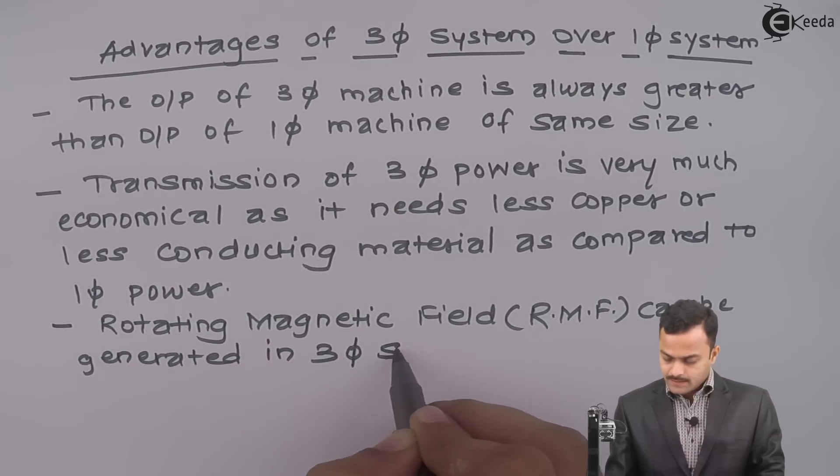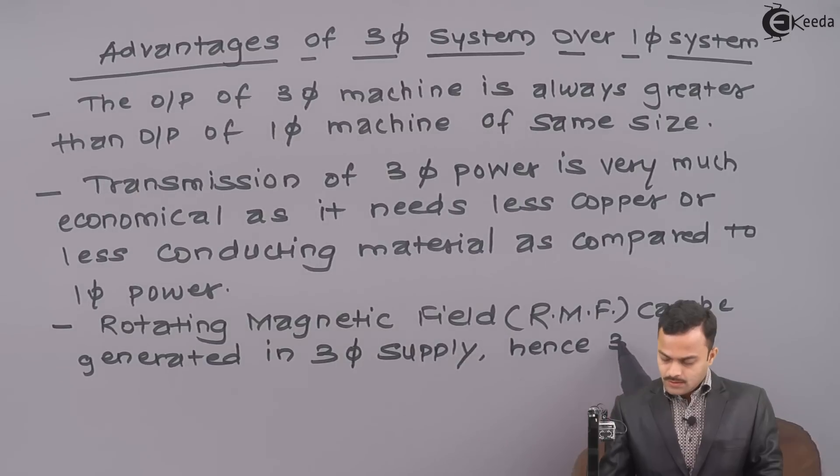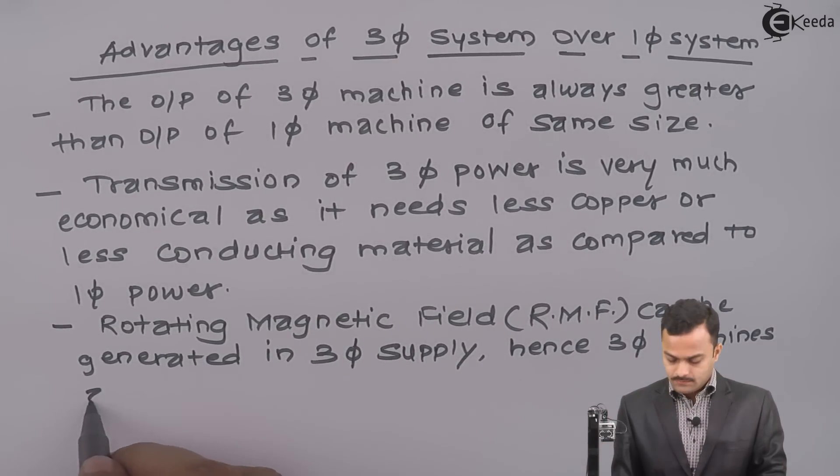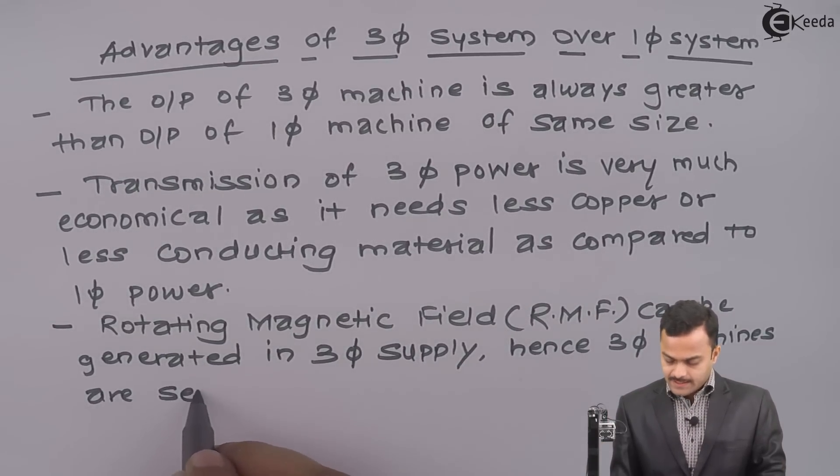Third advantage is rotating magnetic field or you can also call it as RMF can be generated in three phase supply. Hence, three phase machines are self-starting.